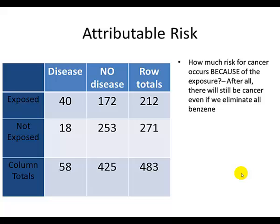Now, if we got rid of all benzene exposure, we'd still have cancer. So we need to somehow define how much risk is directly attributed to the exposure. And that's what attributable risk calculations give us.